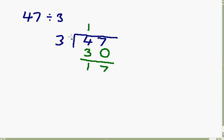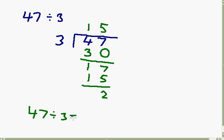And now I go, well, how many 3's can I get into 17? And I think, well, I can get 5 3's into 17. And I go, 5 times 3 is 15. And now I take 15 away from 17, and I get 2. So my answer to 47 divided by 3 is 15, remainder 2.